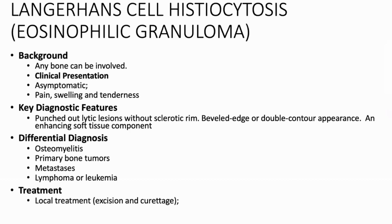Langerhans cell histiocytosis is the new name for eosinophilic granuloma, and it can involve any bone. Whenever you see a lytic lesion in a young patient, you can include eosinophilic granuloma or LCH in the differential without hesitation. These lesions can be asymptomatic or present with pain, swelling, or tenderness. They are usually punched-out lytic lesions showing beveled margins or double contour appearance on CT, with a soft tissue component. Differentials include metastasis, primary osseous tumors such as osteosarcoma, Ewing sarcoma, or lymphoma — which is a big mimicker — and infection. Treatment is excision and curettage.